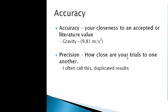Precision, on the other hand, is how close your trials are to one another. Precision has nothing to do with accuracy. What I like to call precision is duplicated results. For example, let's say you do three trials. How close is trial one to trial two? How close is trial three to trials one and two? So this is duplicated results.